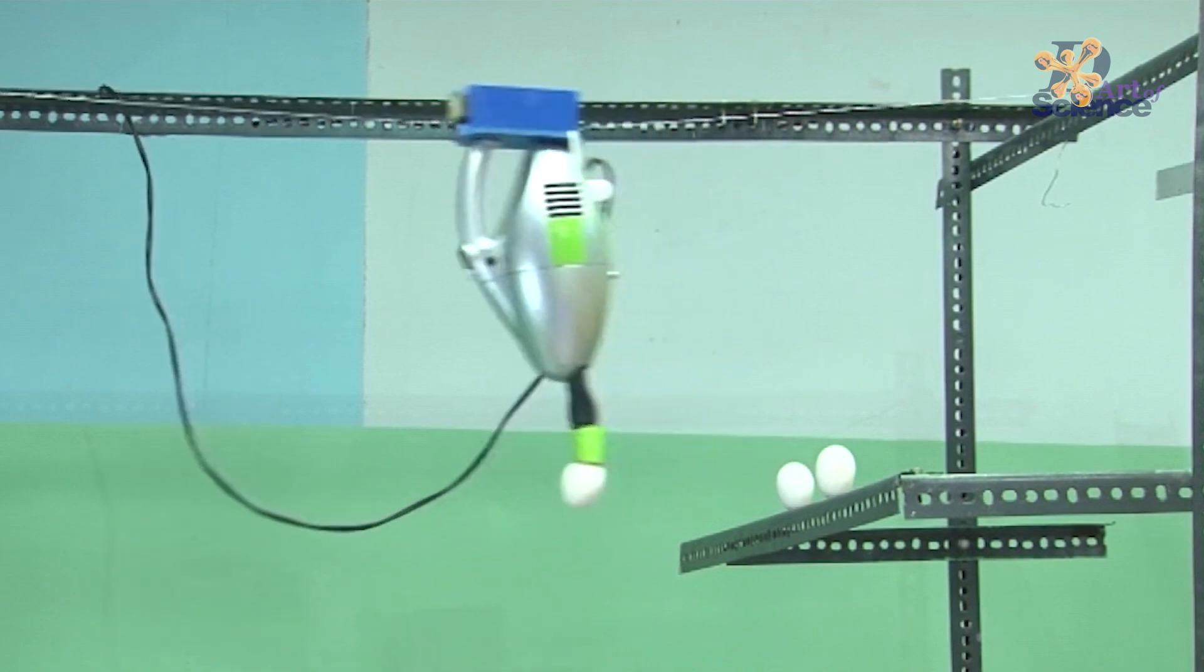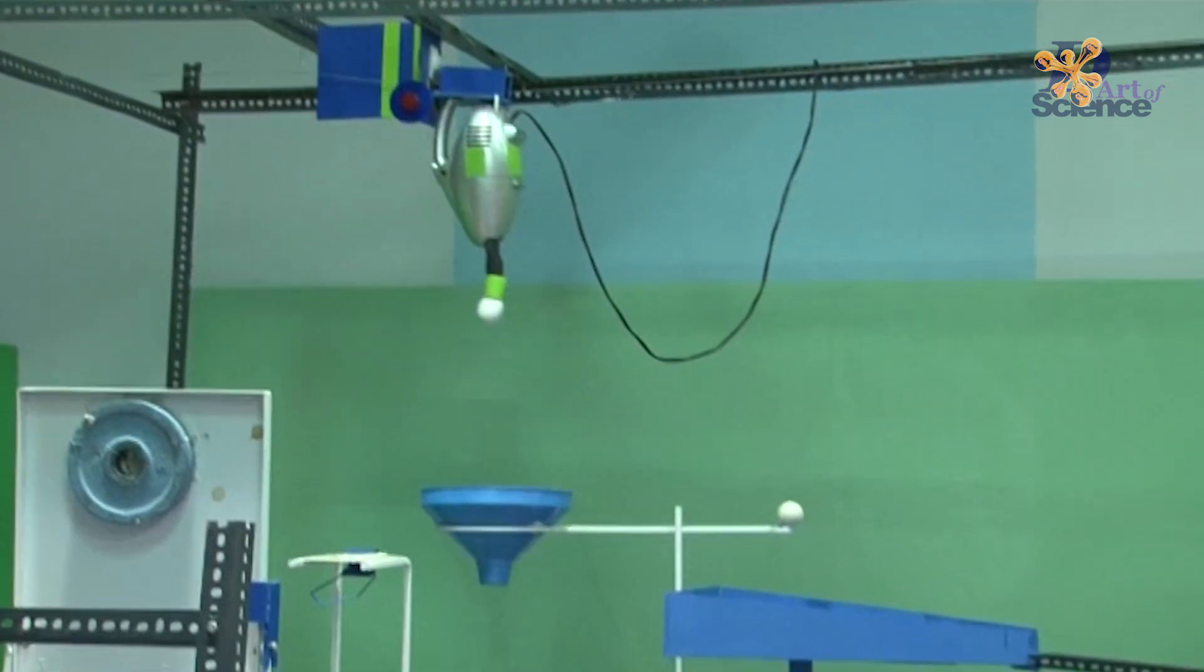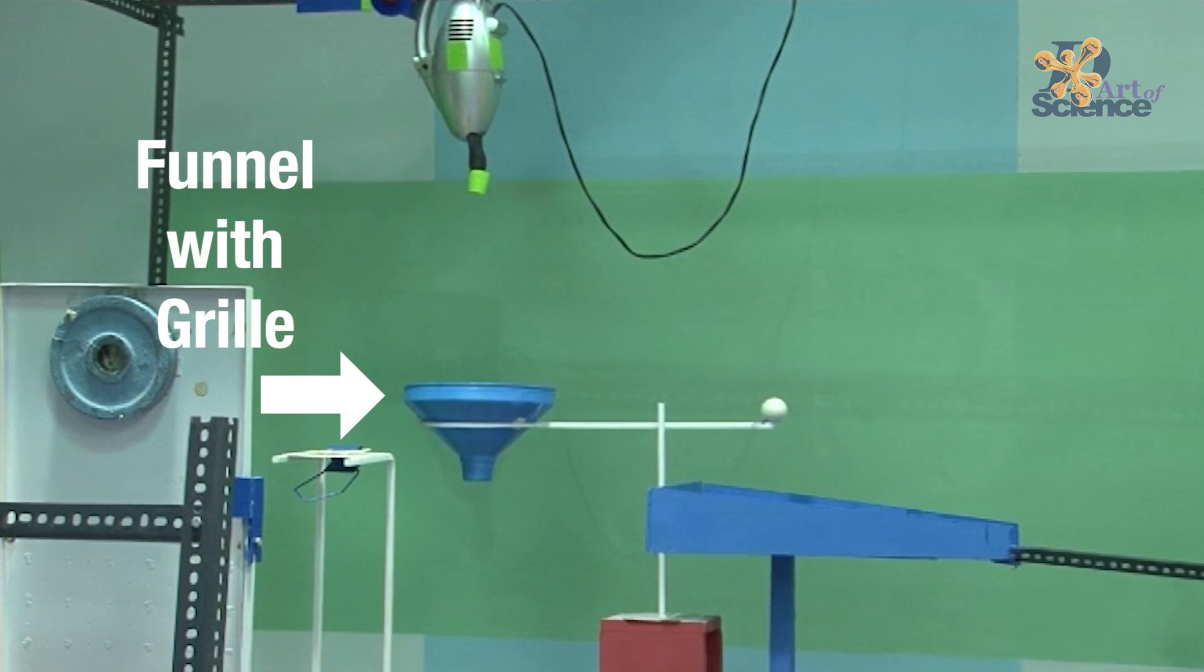First the vacuum cleaner picks up the raw egg and slides down to the other end pressing a stop button. As the suction stops, the egg falls into the big funnel with a metal grill inside to break the egg.